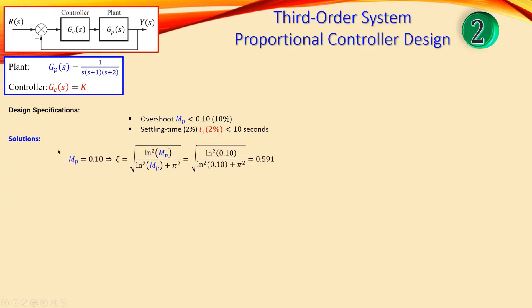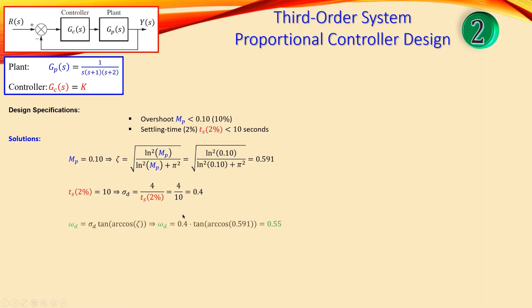The first step is to use the overshoot at its maximum allowed value of 0.10 and calculate the damping ratio zeta using the standard formula. Substituting mp = 0.10 gives zeta = 0.591. From the settling time expression set to 10 seconds, we calculate the absolute damping sigma_d = 4 / ts = 4/10 = 0.4 radians per second. This is the real part of our design point.